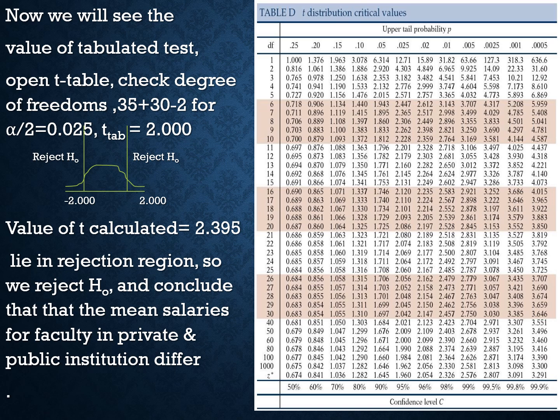The nearest degree of freedom available in the t-table is 60. We look up degrees of freedom 60 at 0.025, and the tabulated value is 2. So the critical value for our test (nearest df = 60) is 2. The calculated T value is 2.395.